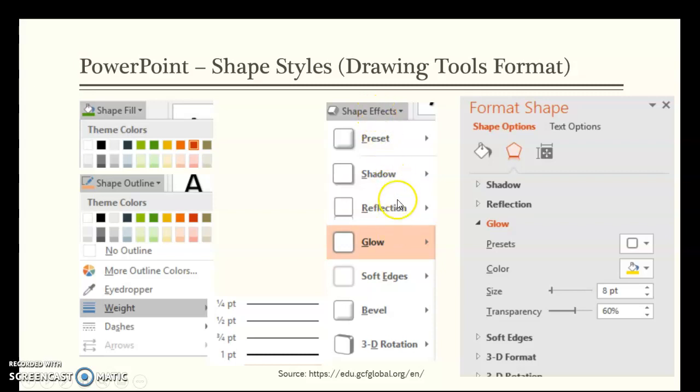If you wanted to add a shadow or a reflection, glow, soft edges, bevel, 3D, there's a lot you can do with your pictures. You can even change the size of the glow, so it's a bigger, brighter glow, or change the transparency so it's not as bright.